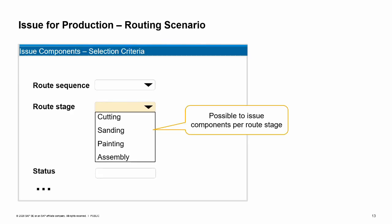After a production order is released, the production manager in OC Woodtrend issues components to production one stage at a time. Issuing components from a production order with routing can be done per routing stage. From the production order context menu, he chooses the option issue components, which displays the issue components selection criteria window. From this window he can adjust the stages or components to issue. Remember that only manual issue items are available for issue.